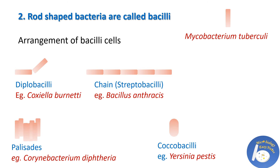The next arrangement is Streptobacilli. When rod-shaped bacteria are arranged in a chain, it is called Streptobacilli. An example is Bacillus anthracis, which is responsible for anthrax. Next is Palisade arrangement. This arrangement is formed during the process of cell division when the bacteria or bacilli bend at the area of division, leading to the formation of a palisade-like structure. An example is Corynebacterium diphtheriae, which is responsible for diphtheria.